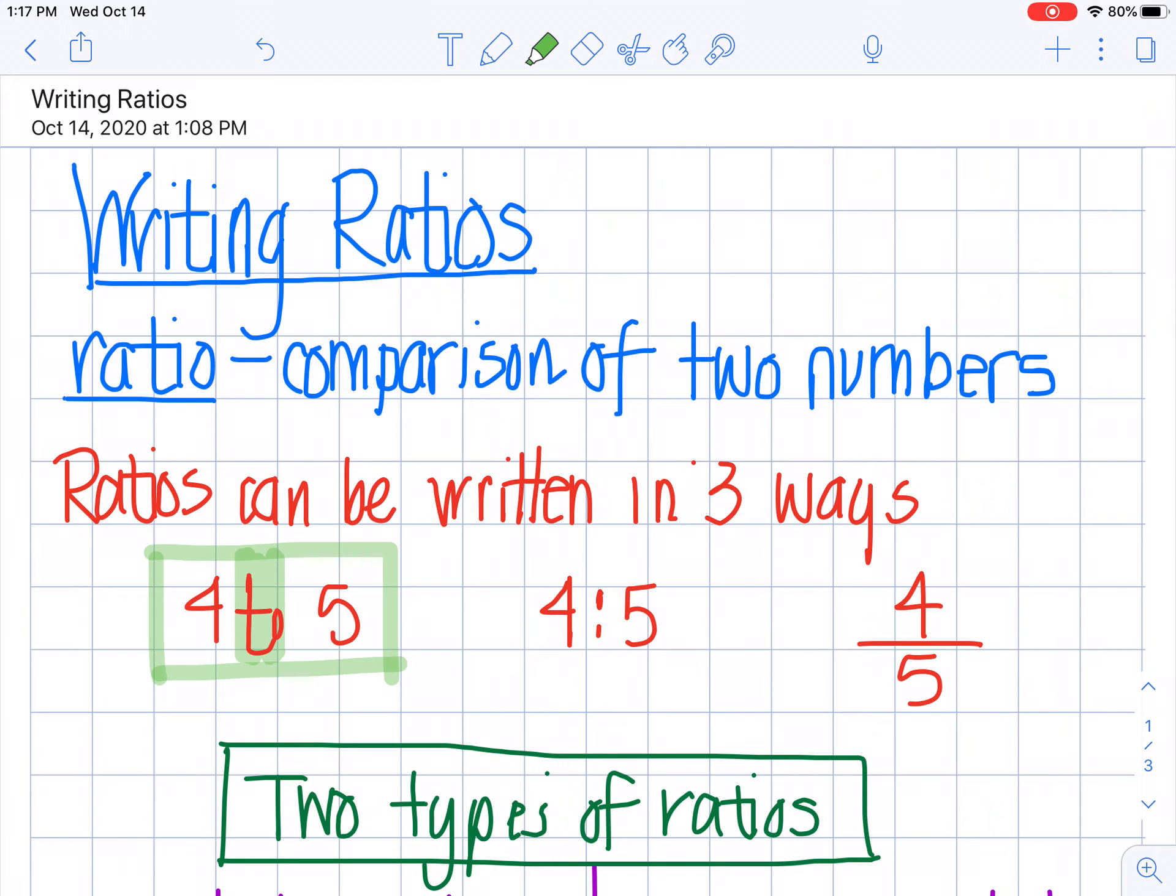The next one, I read the same way where it says four colon five, but I read this colon as four to five. So you can have four colon five. That also represents the ratio four to five.